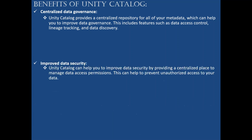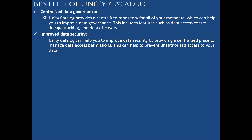Improved data security: Unity Catalog can help you improve data security by providing a centralized place to manage data access permissions. This can help prevent unauthorized access to your data. Unauthorized people cannot access the data, so accuracy will also improve when you control everything at one place.